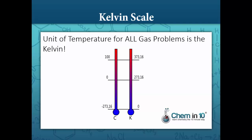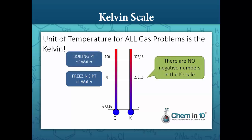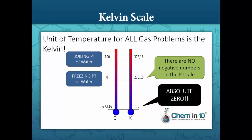If you're ever given gas problems in degrees Celsius, you need to be able to convert it to Kelvin. On the Celsius scale, the freezing point of water is zero and the boiling point is 100. Notice on the Kelvin scale there are no negative numbers — the lowest possible number is absolute zero; it never gets below zero.